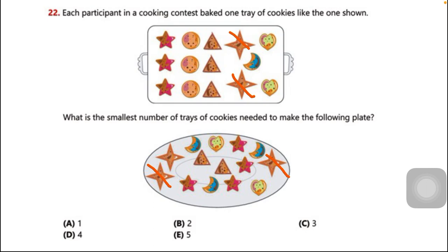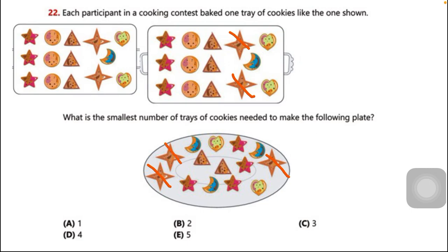There is a third four-arm star cookie on the plate, but that cookie is not available on the first tray, so we need another tray. Now moving to the five-arm star — the pink cookie on the plate. I cut two cookies and matched them on the tray. For the third one I matched it on the tray, but for the fourth one I had to take it from the other tray, the top left corner.